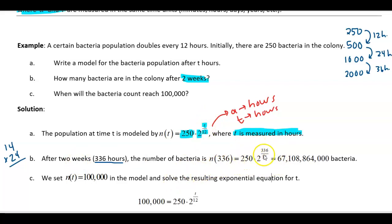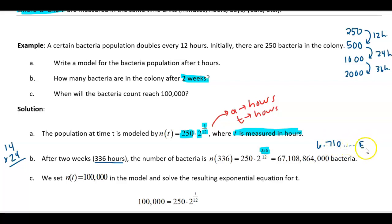Then plug 336 in for t and calculate. The calculator will give you scientific notation on this one — you'll see something like 6.710... with a little 'e' and then a 10. This is scientific notation, like from science class with base 10 — that's 10 to the 10th.